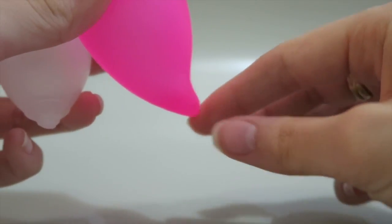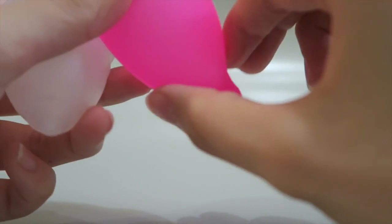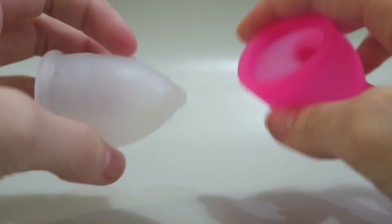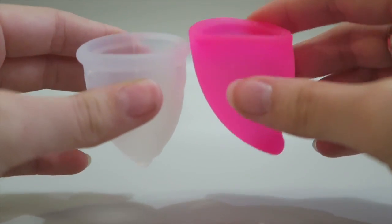The other thing about the Fun Cup is it has a very firm little nib here at the bottom, it's not squishy at all like it is up here. Whereas the Organic Cup is squishy all the way to the end. The Organic Cup did also come with a stem which I've cut off because I have a low cervix so I don't need it.